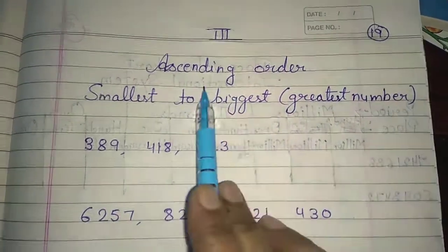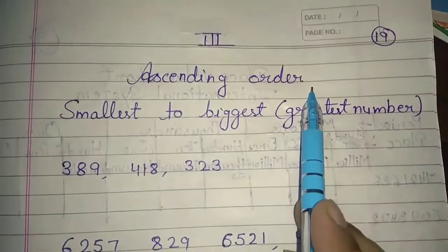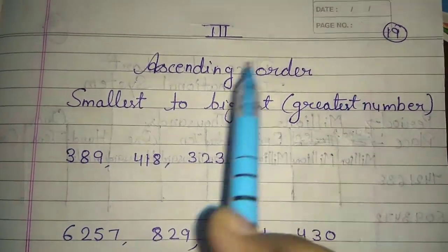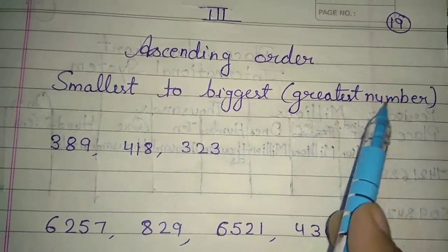Good morning students, today's topic is Ascending Order and Descending Order. Ascending Order means, what do you mean by Ascending Order? Ascending Order means arrange the numbers smallest to biggest or greatest number.